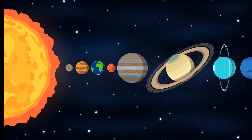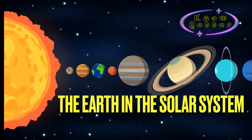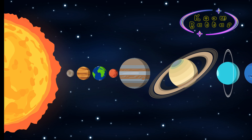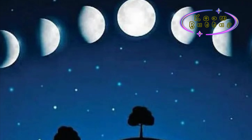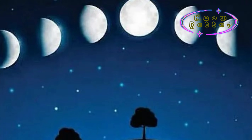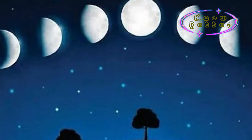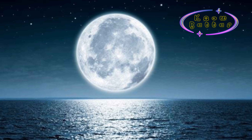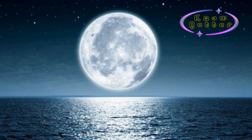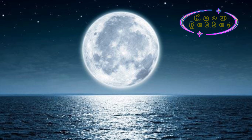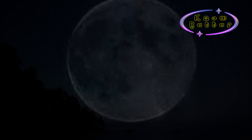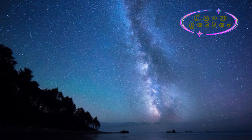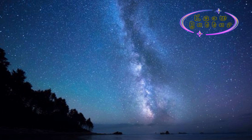Welcome to Know Better. We are discussing the Earth in the solar system. The moon doesn't twinkle like stars. It may appear in the sky at different times, in different shapes, and at different positions. There's something called a full moon night, or Purnima, and a new moon night, Amavasya. The new moon night is the clearest night — you can see everything in the sky.